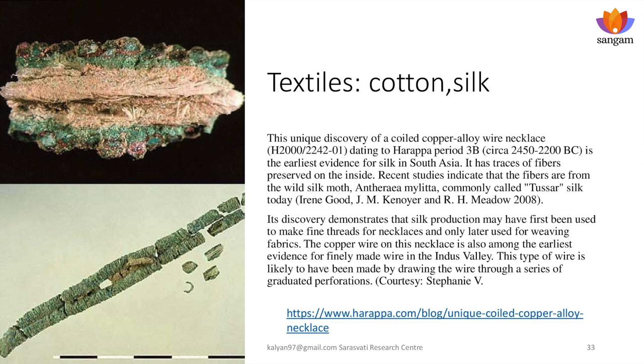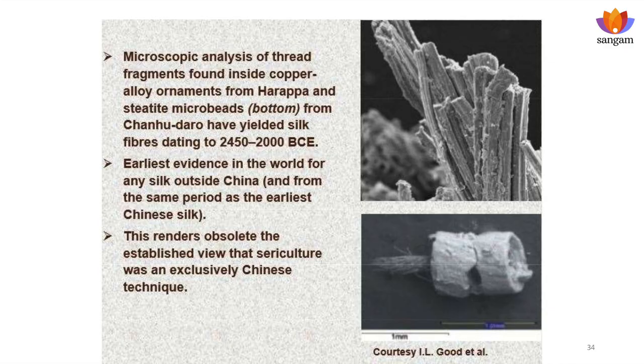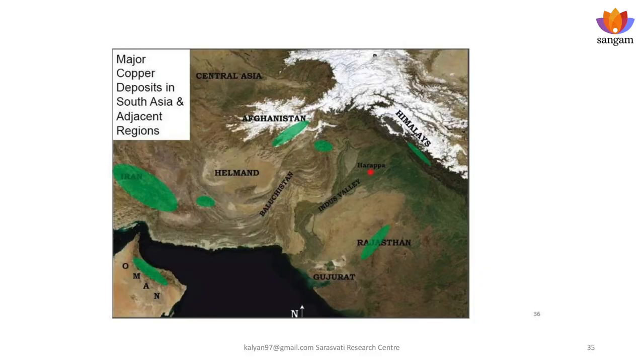The unique discovery of a coiled copper alloy wire necklace dating to 2150 BCE is the earliest evidence of silk in South Asia. There is a dispute about whether silk came from China first or from Bharat first — it appears it was from Bharat, from the Saraswati Sindhu civilization. Microscopic analysis of the thread fragments conclusively proved that silk fibers were used for making these threads. This renders obsolete the established view that sericulture was an exclusive Chinese technique. Indians also were experts in Benarasi saris, Kanjivaram saris, and silk saris.